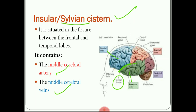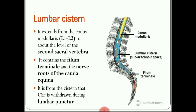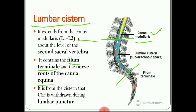One more important cistern related to the spinal cord is the lumbar cistern. It is located distal to the conus medullaris, which is at the level of the L1–L2 vertebra, and extends from L1–L2 down to the second sacral vertebra. Its contents include the filum terminale and the nerve rootlets of the cauda equina. It is from this cistern that CSF is withdrawn during lumbar puncture.